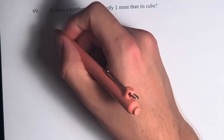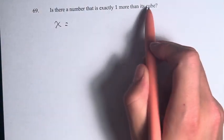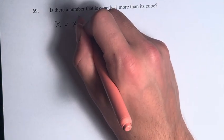So what would that actually look like? Well, if we have some number x, we're saying that x is equal to one more than its cube. So it's equal to itself cubed plus one.